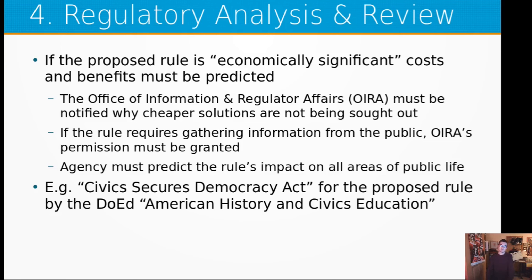Step four is regulatory analysis and review. If a proposed rule is economically significant, costs and benefits have to be predicted. There is the Office of Information and Regulatory Affairs, or OIRA, which is under the direct purview of the presidency. The president basically authorizes every single regulation that goes through his administration through his federal agencies. That office has to be told why cheaper solutions are not being sought out. If the rule requires gathering information from the public, OIRA must also grant that permission, and the agency has to predict the rule's impact on all areas of public life and create documentation on that.